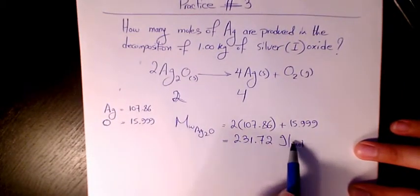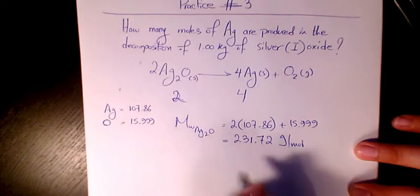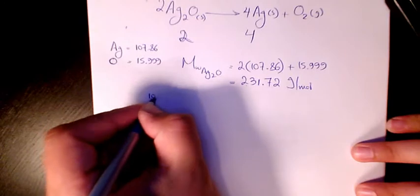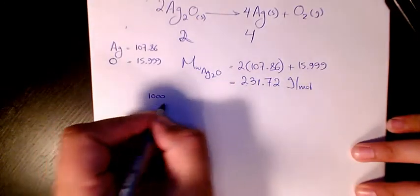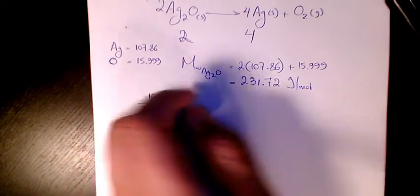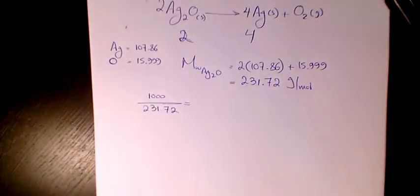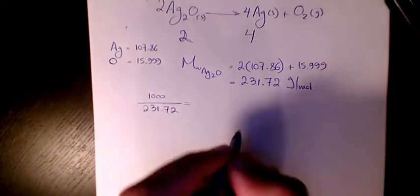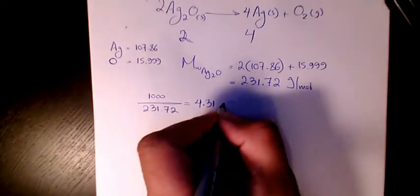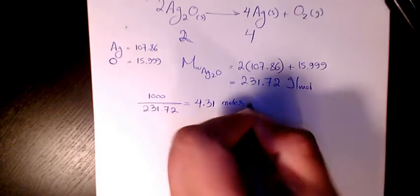That makes it 231.72 grams per mole. It means that 1 mole contains 231.72 grams of Ag2O. Then 1 kilogram, which is 1000 grams, divided by 231.72—that will be 4.31 moles. So 1 kilogram of silver(I) oxide is 4.31 moles.